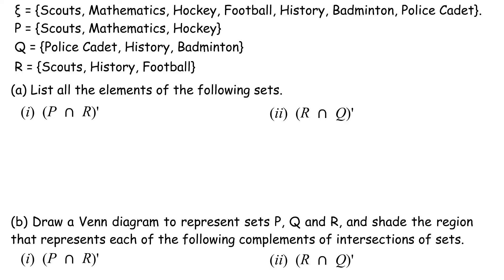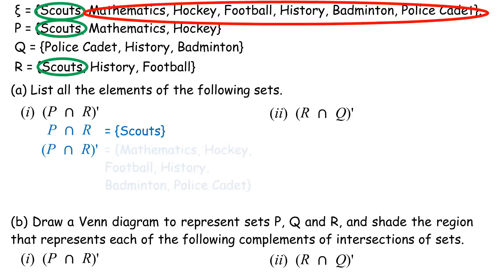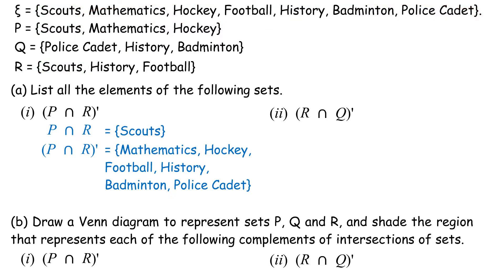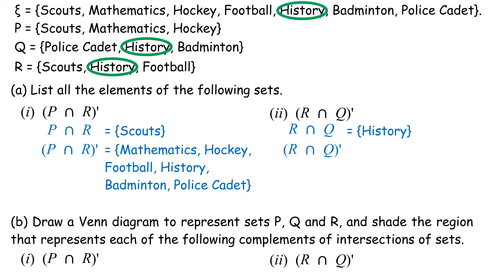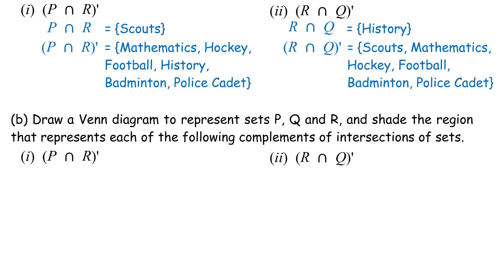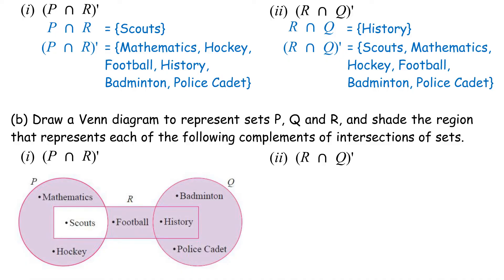P intersect R = {Scouts}. Complement of (P intersect R) = {Mathematics, Hockey, Football, History, Badminton, Police Cadet}. R intersect Q = {History}. Complement of (R intersect Q) = {Scouts, Mathematics, Hockey, Football, Badminton, Police Cadet}. Venn diagram shading for items 1 and 2 shown.